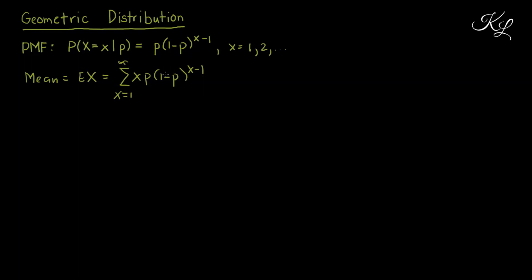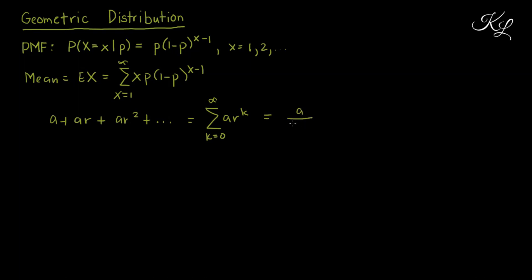In order to simplify this, let us recall the formula for the sum of an infinite geometric progression. We know that a + a·r + a·r² + ... is an infinite series, where r is the ratio of a succeeding term over the preceding term. In summation notation, this is the sum of a·r^k from k equals 0 to infinity, and when k equals 0, r^0 is 1, so we have a, progressing infinitely.